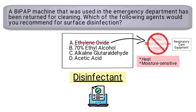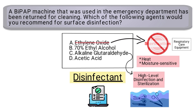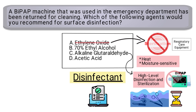Alkaline glutaraldehyde is used for high-level disinfection and sterilization, and requires the object to be submerged in the solution for a period of time. This is not possible with a BiPAP machine, therefore we can rule out C as well.